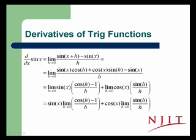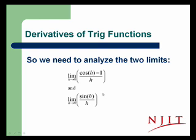So the two limits we need to analyze are the limit as h goes to 0 of cosine of h minus 1 over h, and the limit as h goes to 0 of sine of h over h.